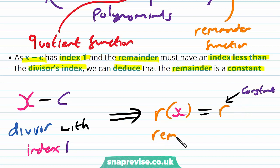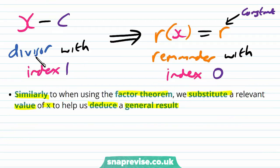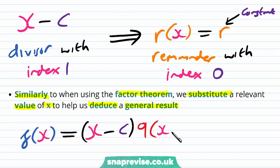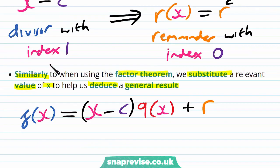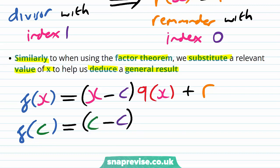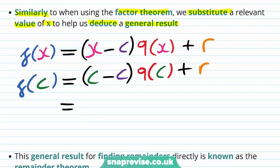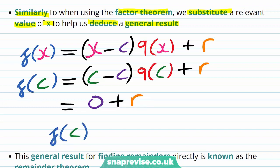Since r(x) is a constant, we have f(x) = (x - c)·q(x) + r. Similarly to when using the factor theorem, we substitute a relevant value of x. Substituting x = c gives f(c) = (c - c)·q(c) + r. Since c - c = 0, this term vanishes, leaving f(c) = r. Hence we find that f(c) equals the remainder r.